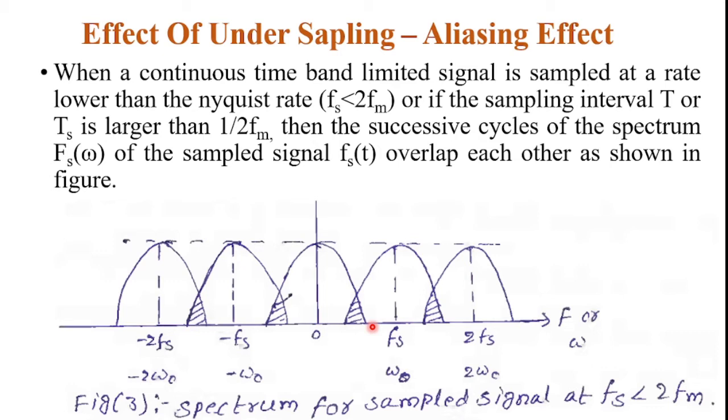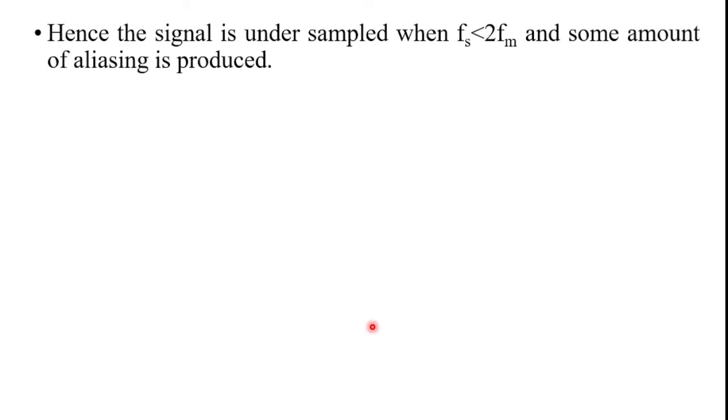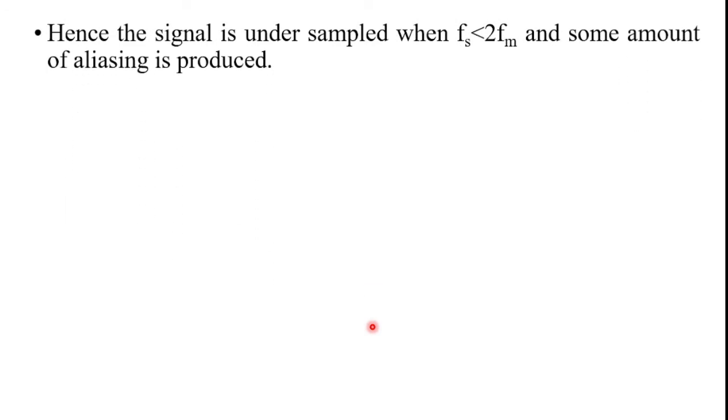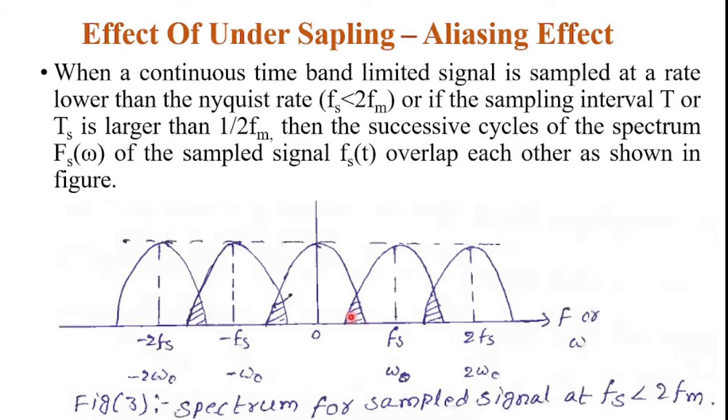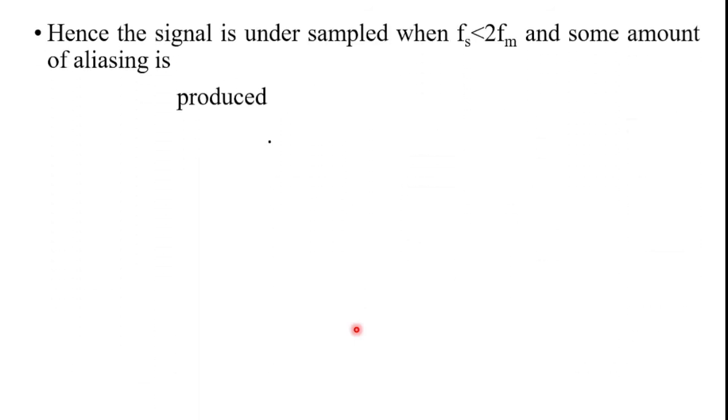Hence the signal is under sampled when FS is less than 2 FM and some amount of aliasing is produced. That aliasing is shown in this waveform. This shaded region is called as aliasing effect.